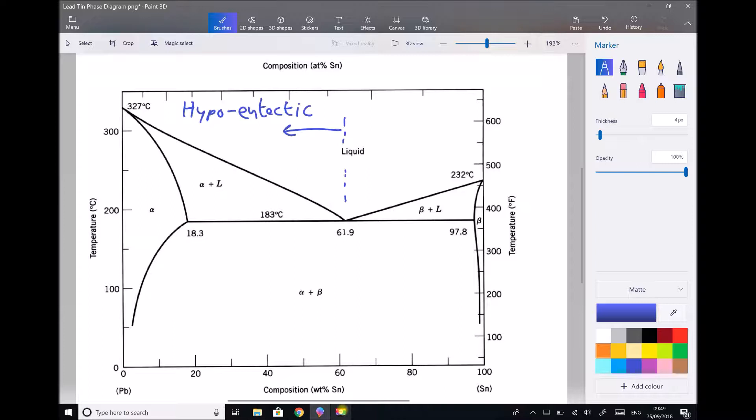So let's for argument's sake, say we have a composition of 40% tin, and here we're at around 270 degrees C.